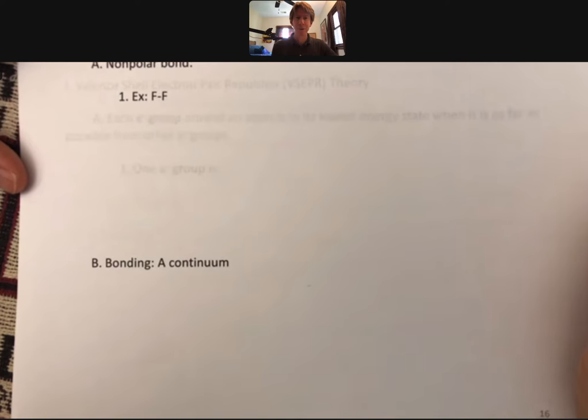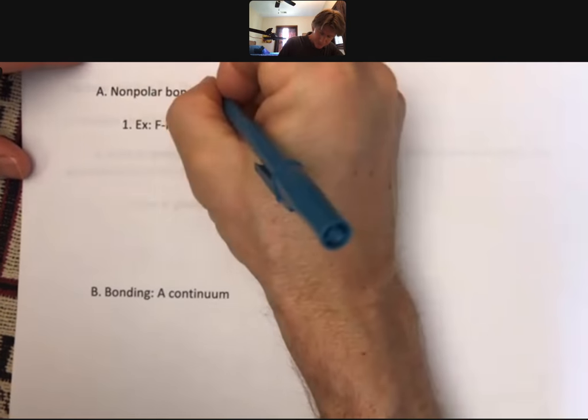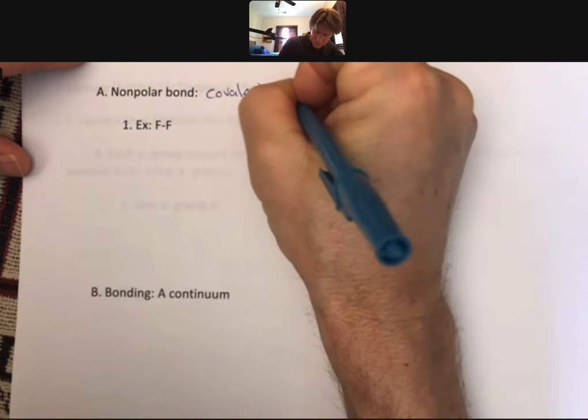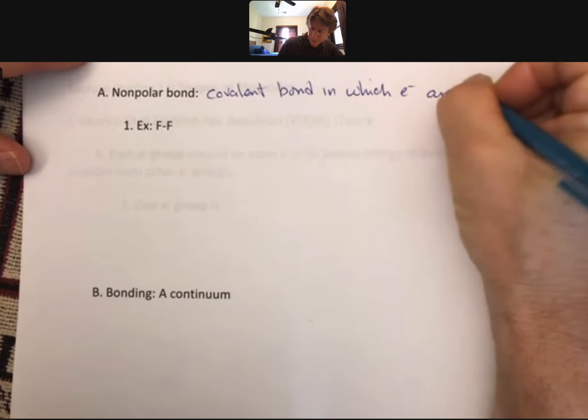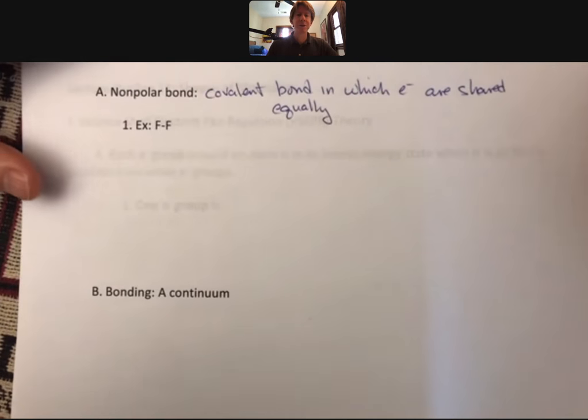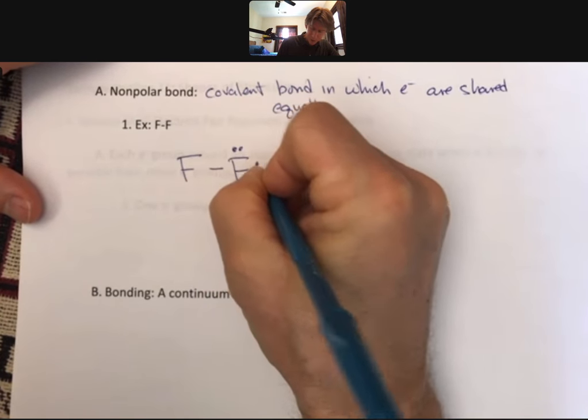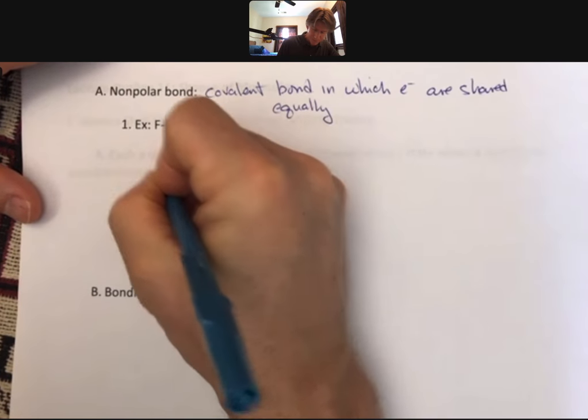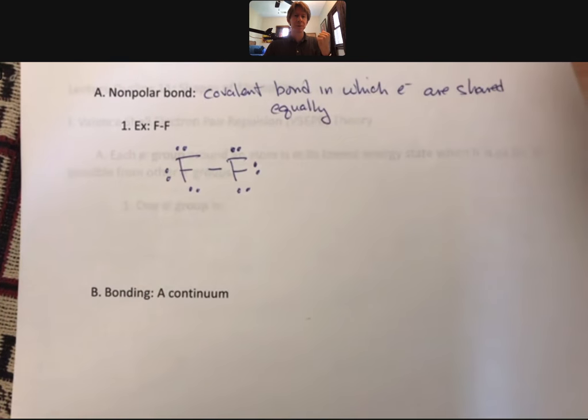Now a nonpolar bond is a covalent bond in which the electrons are shared equally. Typically the way that that happens is that the two atoms are the same. If we were to draw the Lewis structure for fluorine, first we'd have to put all of our electrons in.